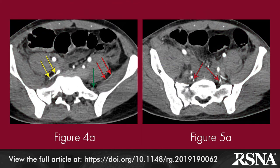Figure 4a. Axial CT angiogram in a 35-year-old man shows the right iliolumbar artery (yellow arrows) arising from the posterior division of the internal iliac artery and following a horizontal outward trajectory anterior to the sacral ala. It bifurcates at the pelvic inlet level into the iliac (red arrows) and lumbar (green arrows) branches. The iliac artery is seen anterior to the iliacus muscle, and the lumbar artery runs vertically anterior to the sacral ala on the left side.